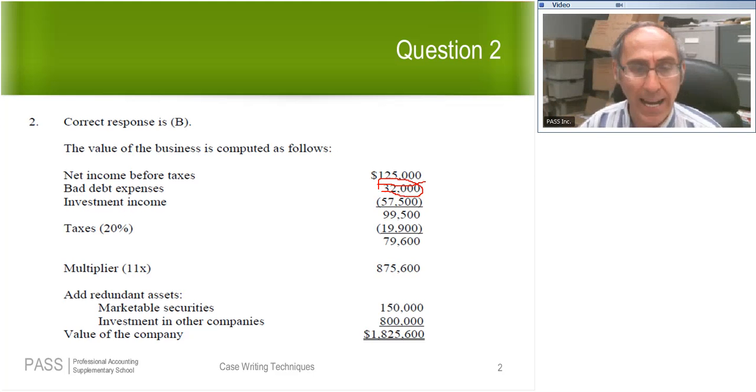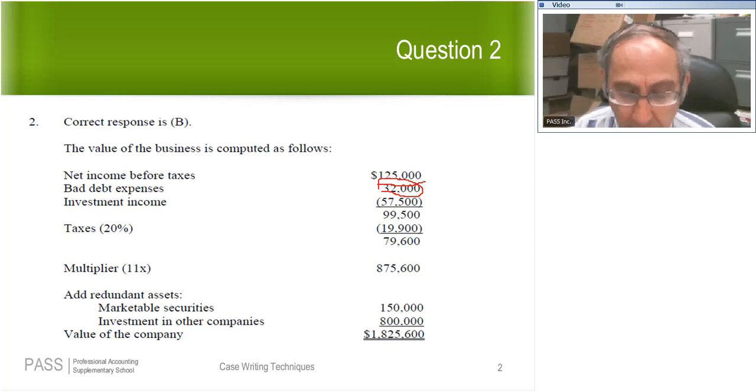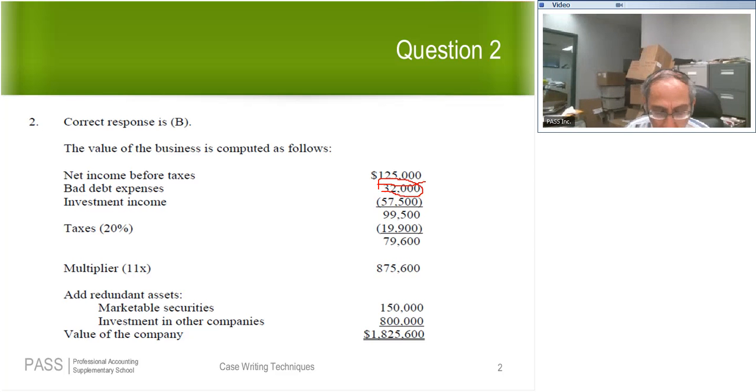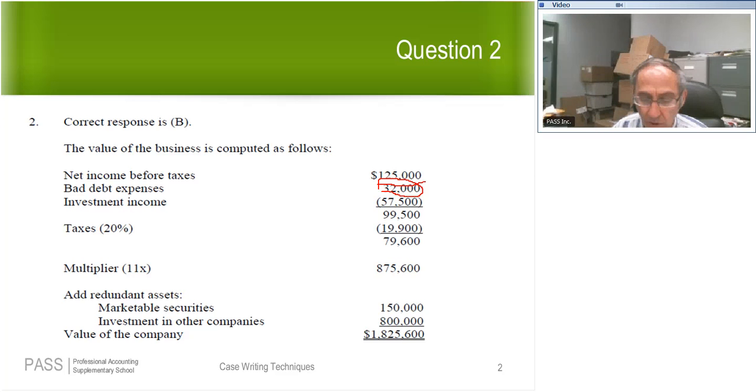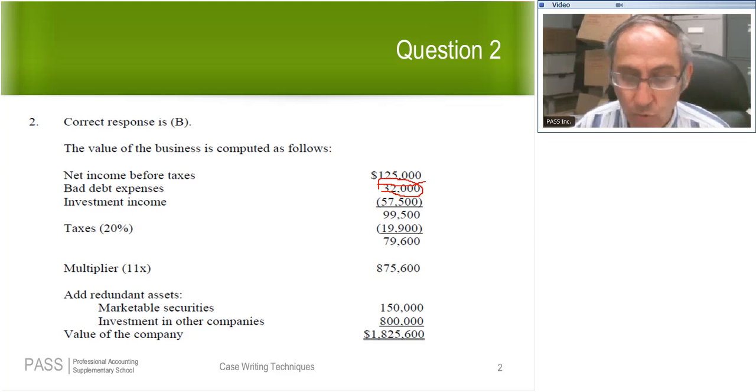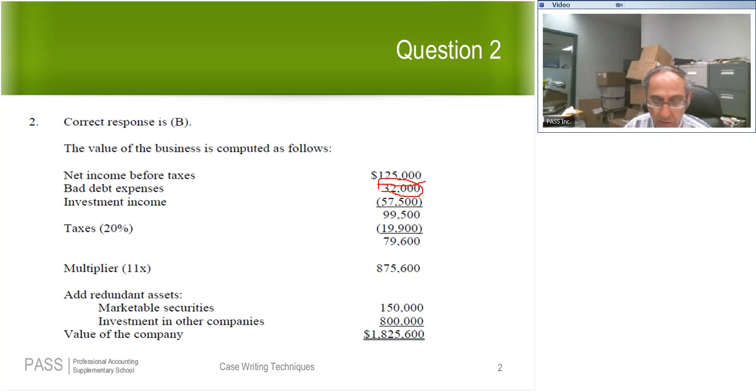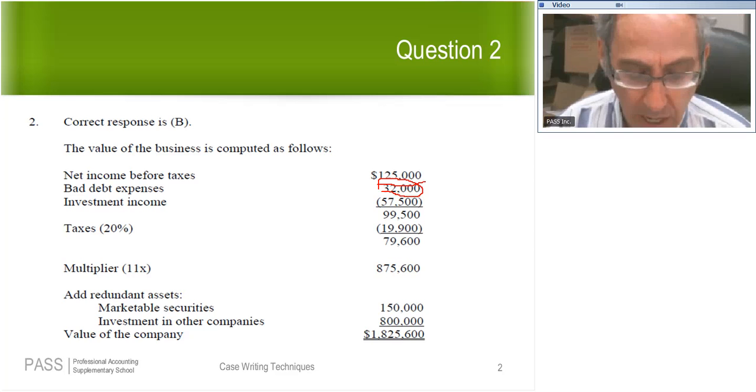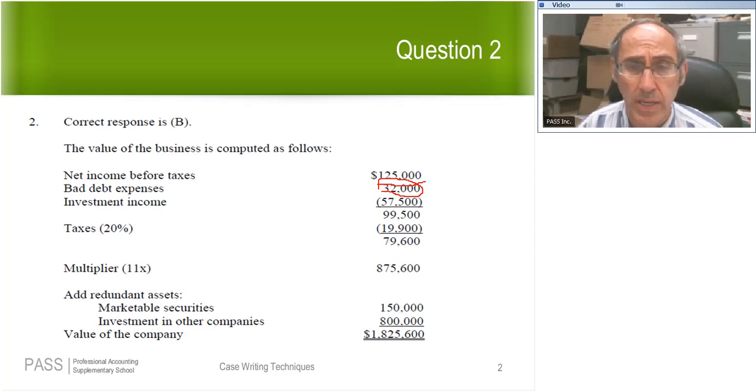The reason why I would add back the investment income is I would argue that that is income relating to a redundant asset. The investment income, where does that come from? It basically tells you that they have these investments. If you take a look, starting with the fourth line of the verbiage in the question, recently Peter and Lam have taken an interest in investments, specifically other resource companies. Since Marigold Mining has been profitable since 1998, they managed to build their cash position in the company to a point where they used funds to invest in other companies and purchase marketable securities.